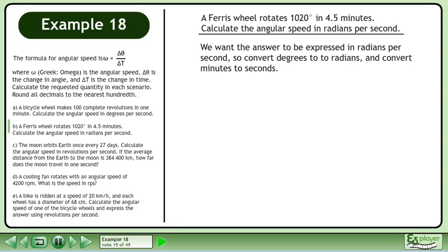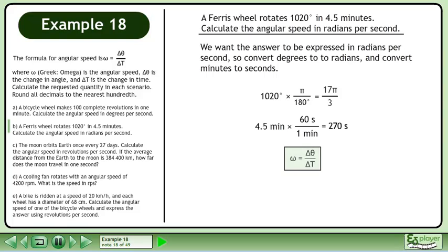We want the answer expressed in radians per second, so convert degrees to radians and convert minutes to seconds. Convert 1,020 degrees to radians using the conversion multiplier pi over 180 degrees, giving us 17 pi over 3 radians. Convert 4.5 minutes to seconds using the conversion multiplier 60 seconds over 1 minute, giving us 270 seconds. Plug in 17 pi over 3 for the change in angle and 270 seconds for the change in time. This gives us 0.07 radians per second.